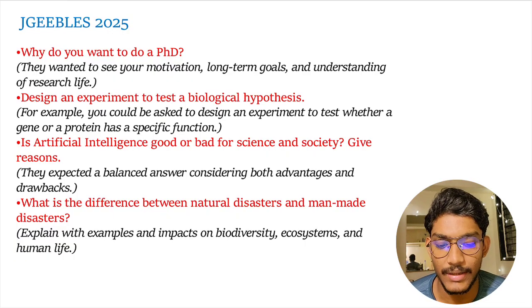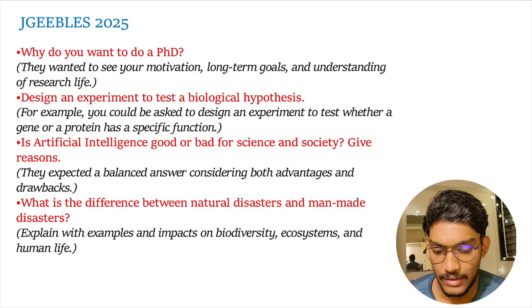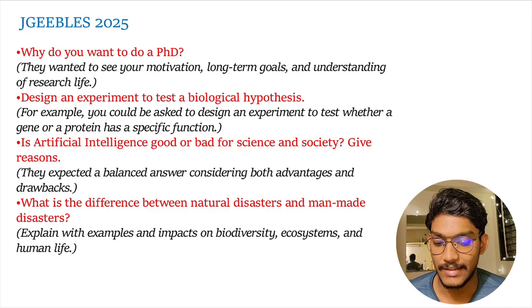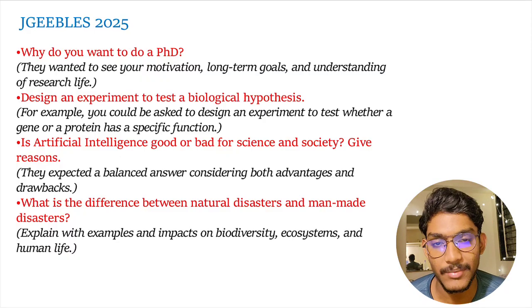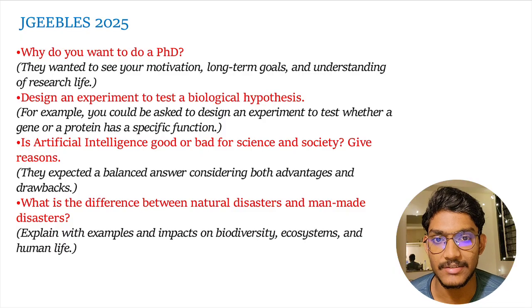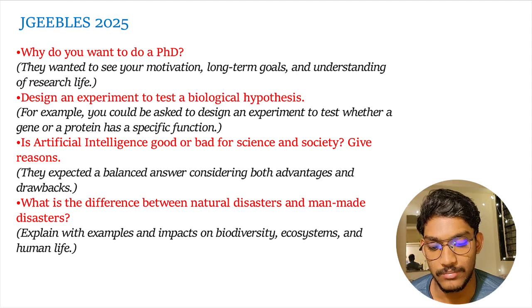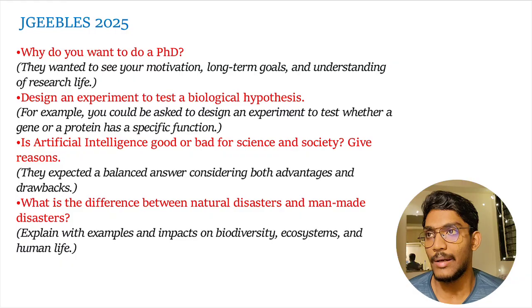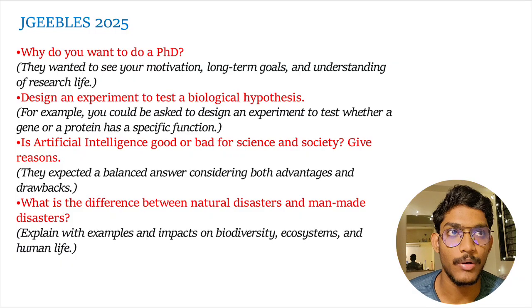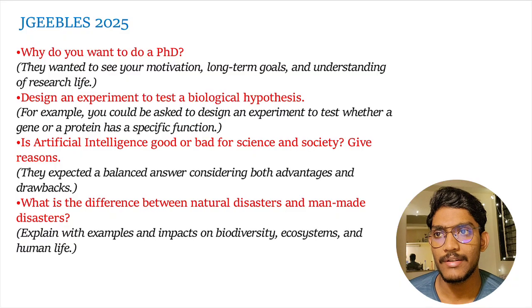Another question was whether artificial intelligence is good or bad for society and science — you have to give reasons for both sides. And another question was: what is the difference between natural disaster and man-made disaster? Natural disasters like tsunami or earthquake; man-made disasters like atomic explosions, the Chernobyl explosion, or the Bhopal gas tragedy. You have to think right at that moment and answer these questions.